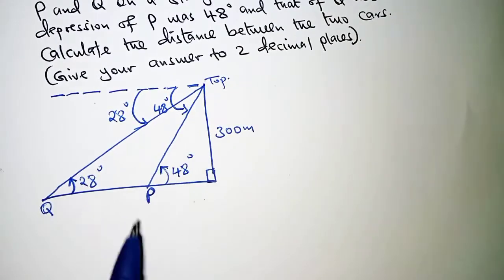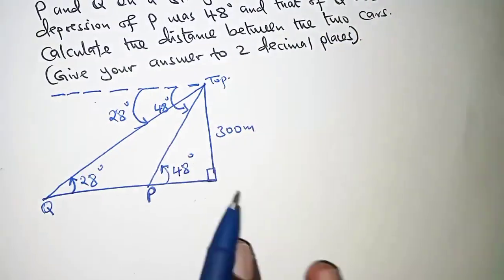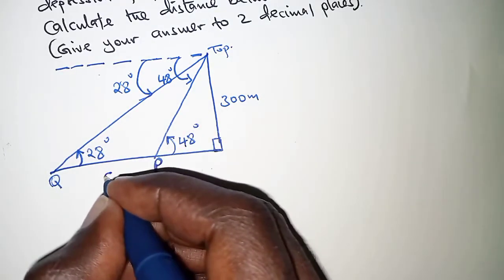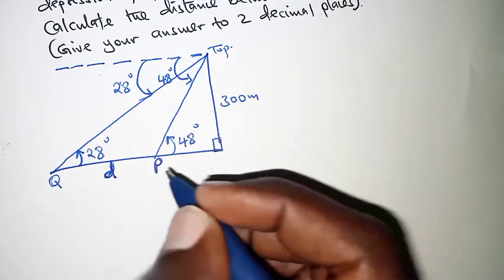So, what you are required to do is to calculate the distance between the two cars. So, that is QP. We can call it D. Let's call the distance D.